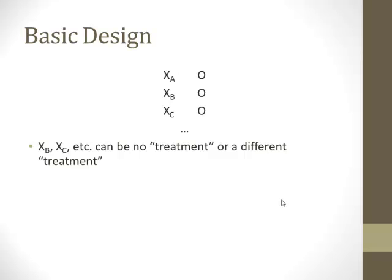The basic cross-sectional research design is shown in this slide. We have our observation occurring all at one point in time, and it comes after some type of treatment. These groups tend to be units — they might be different cities, different individuals, different school districts. There's some type of unit of analysis that forms our different groups. What we're looking at is differences among the groups at one point in time as a way to be able to assess causality.